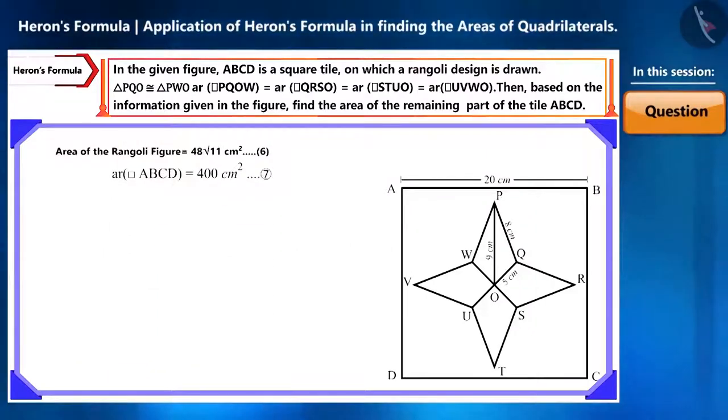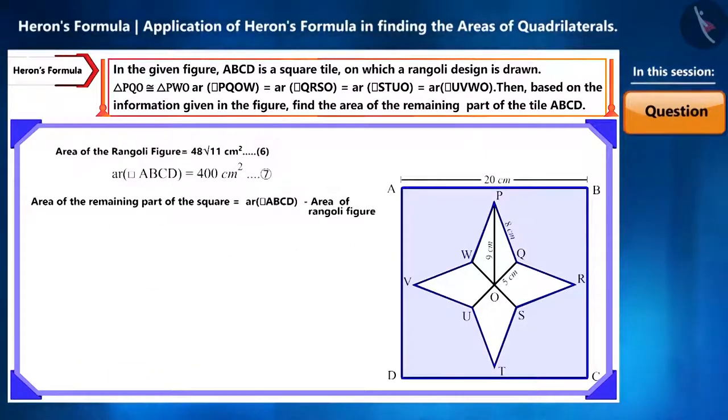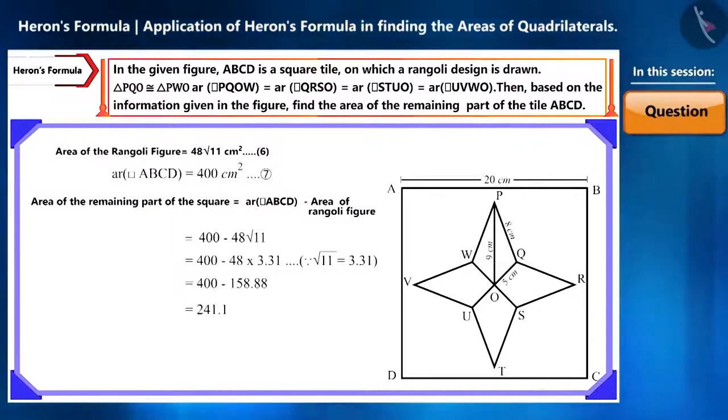Now we can find the area of the remaining part of the square tile by deducting the area of the rangoli from the area of the square tile. By substituting their values in this equation, we can find the area of the remaining part, which will be equal to 400 - 48√11 cm². Friends, you can substitute the value of √11 here and simplify it.